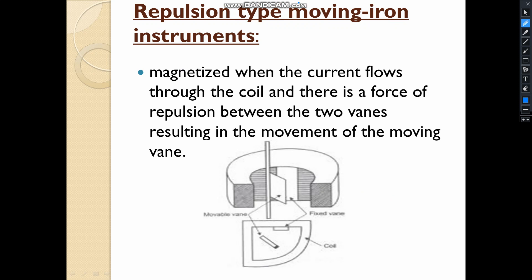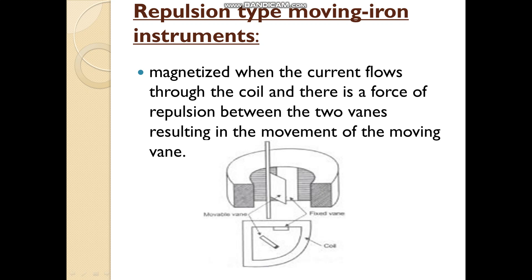In the repulsion type, the main difference is that there are two vanes — one fixed vane and one moving vane. The moving vane tries to move to the position of minimum reluctance such that inductance will be high. Under the repulsion type, there are two sub-types: radial vane and coaxial. In radial vane type, the vanes are radial strips of iron, whereas in the coaxial type there are sections of coaxial cylinders.